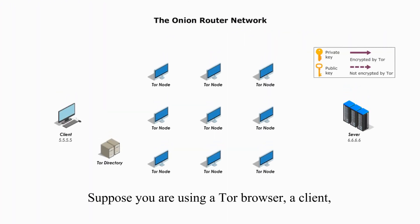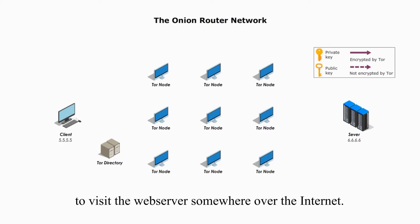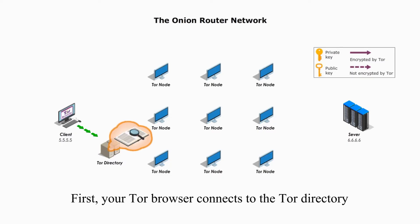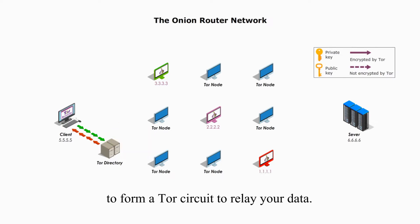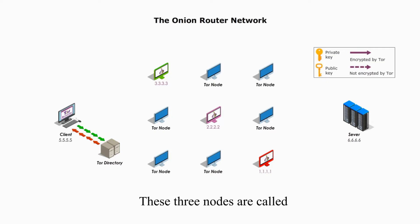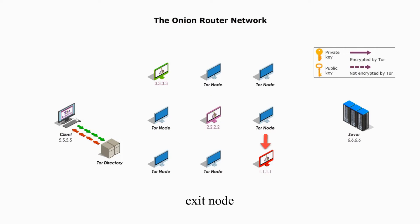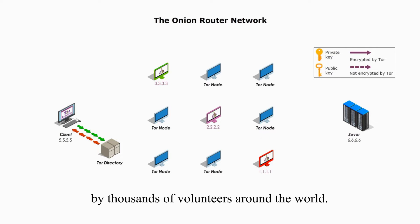Suppose you are using a Tor browser, a client, to visit a web server somewhere over the internet. First, your Tor browser connects to the Tor directory and chooses three random nodes or onion routers to form a Tor circuit to relay your data. These three nodes are called Entry Guard, Middle Relay, and Exit Node. All these nodes are provided by thousands of volunteers around the world.